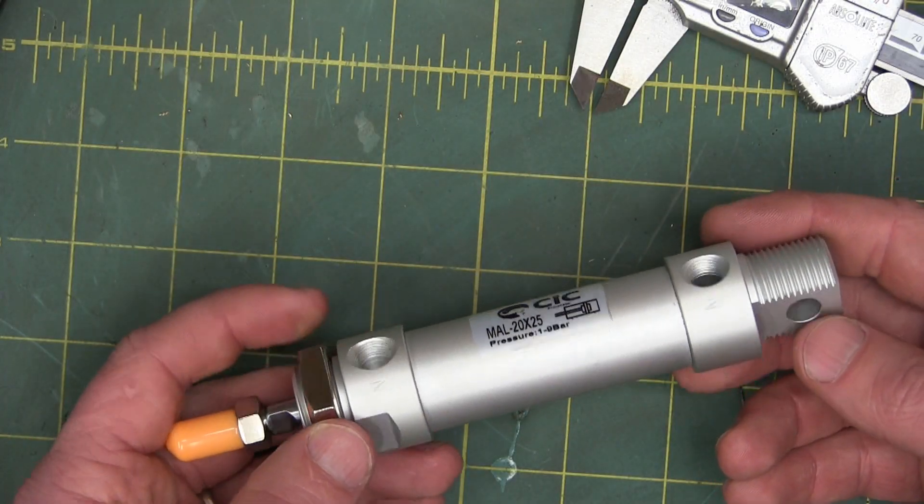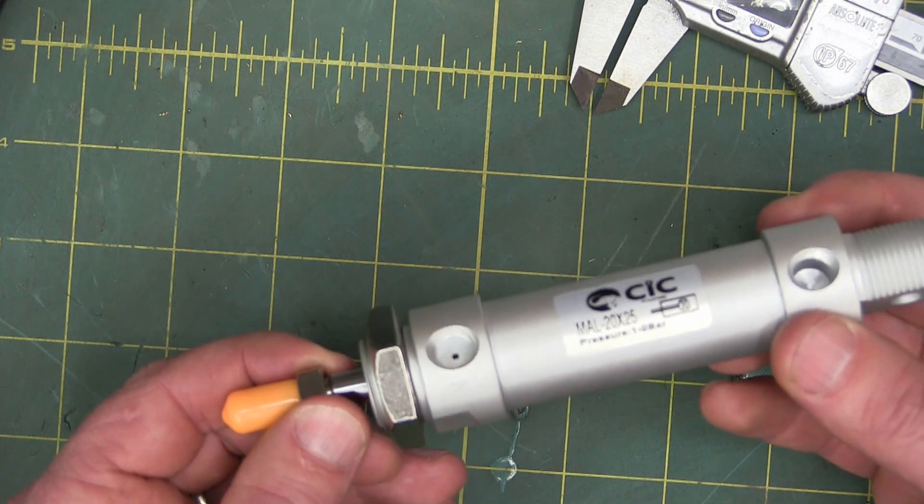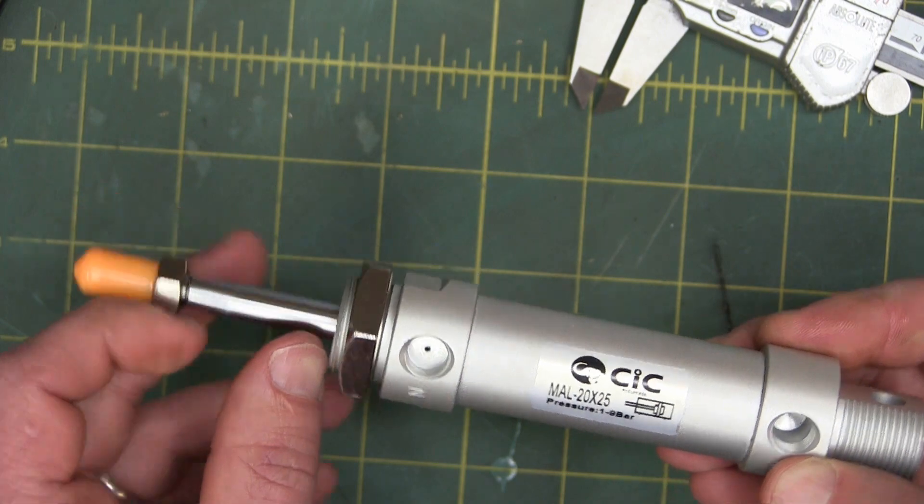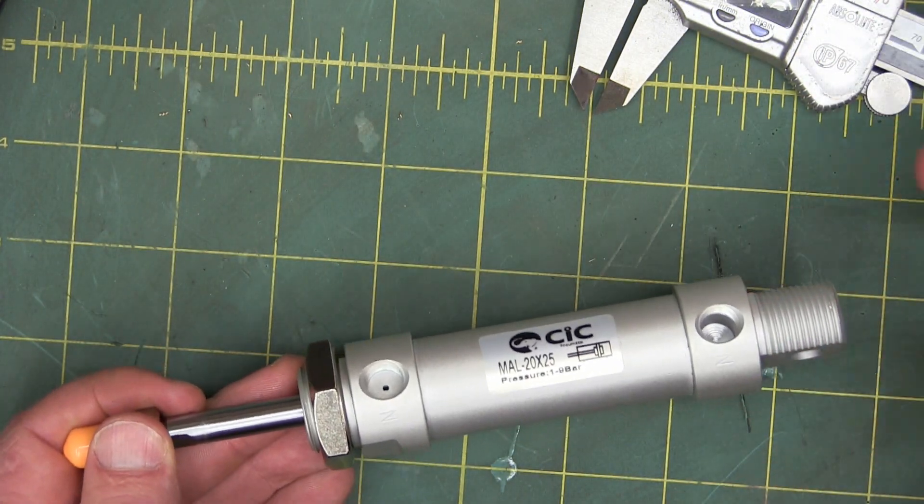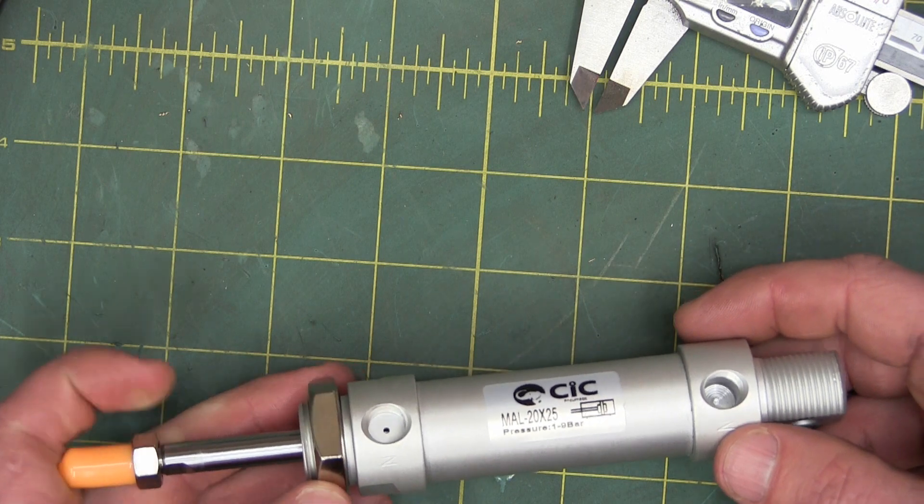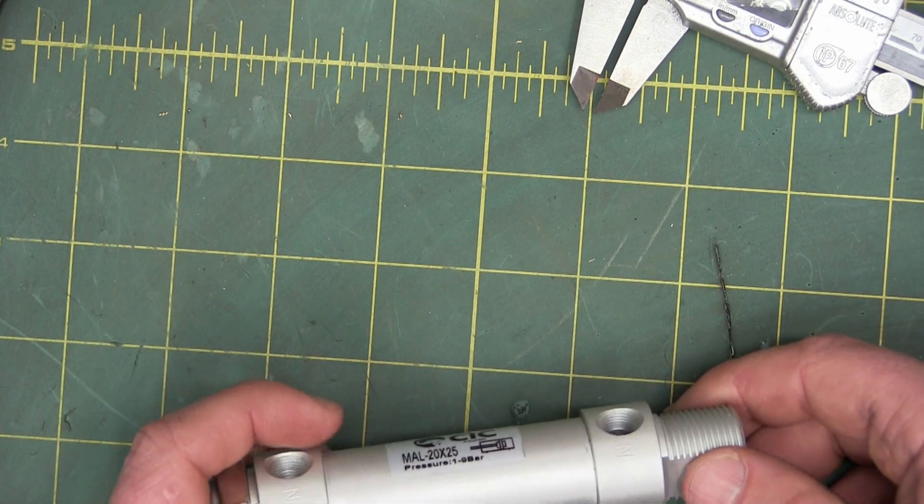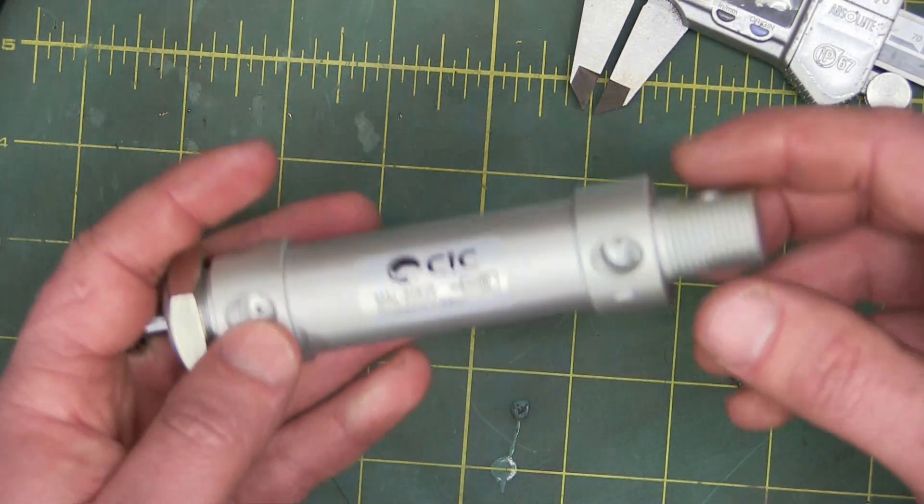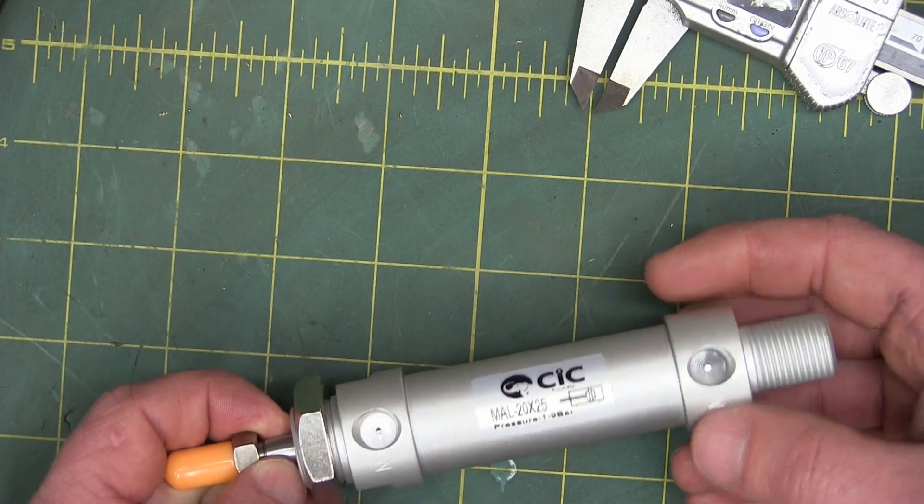So we have an aluminum pneumatic cylinder threaded on the blind end, threaded on the gland end, a little of the old in-out-in-out. Defined stroke. Essentially we feed in a pressurized fluid. In this case the fluid is air, which is a compressible fluid. A fluid means something that conforms to the shape of whatever is holding it in. So air is a fluid.